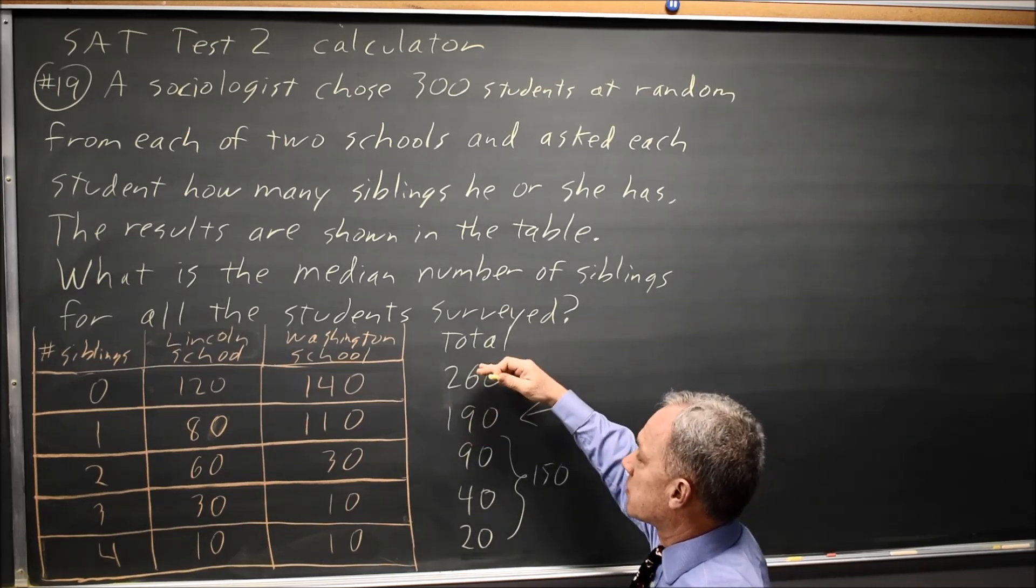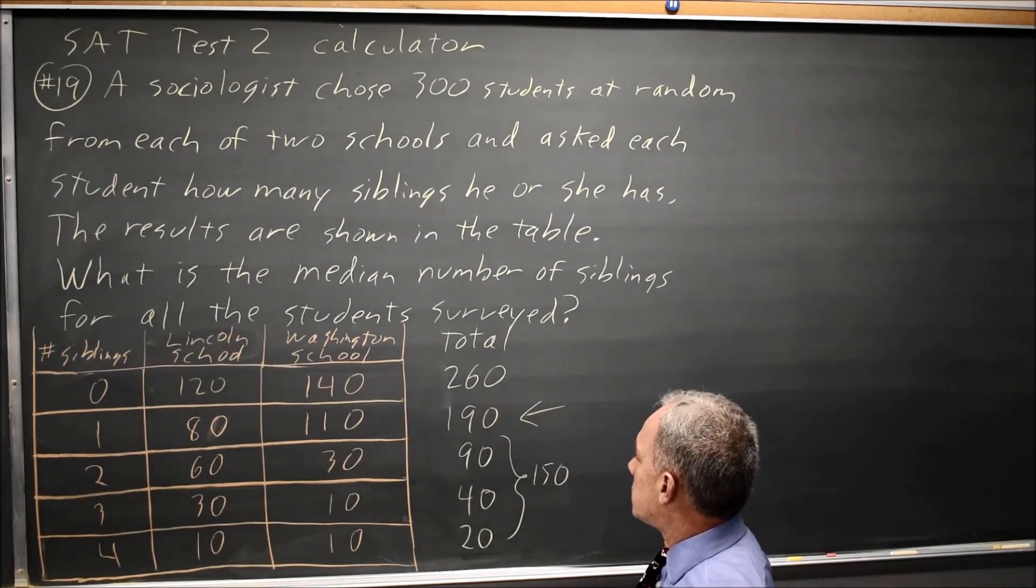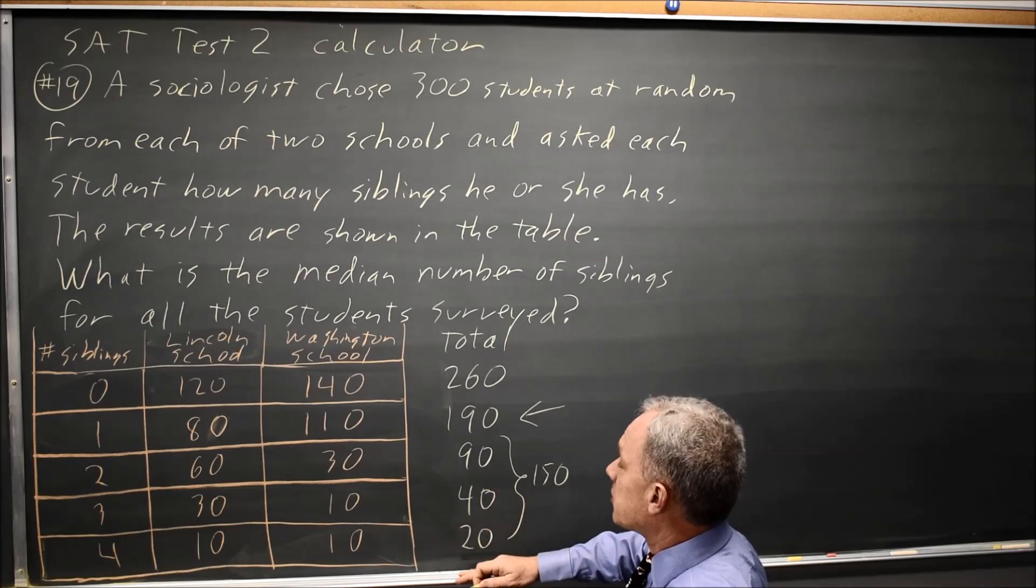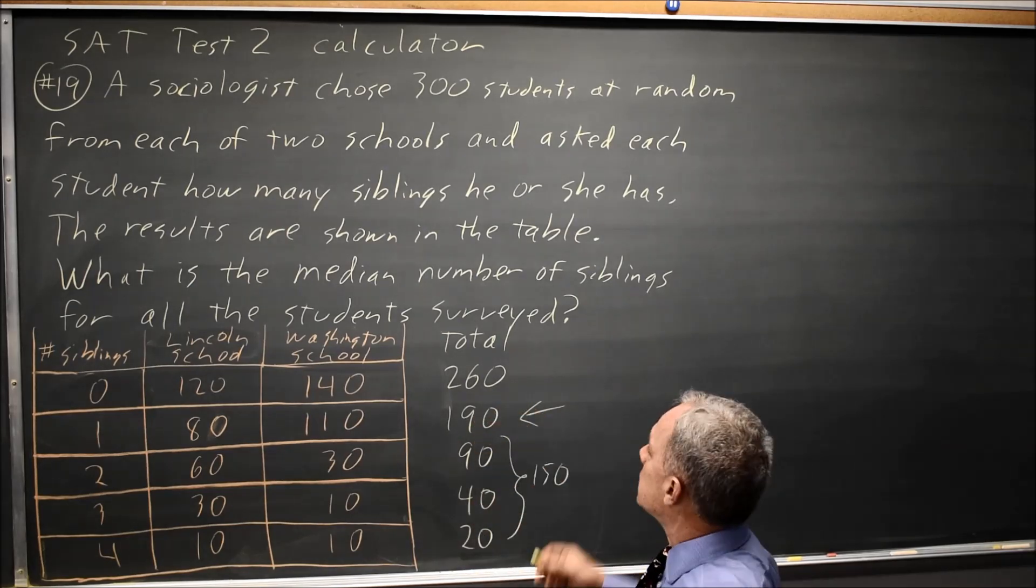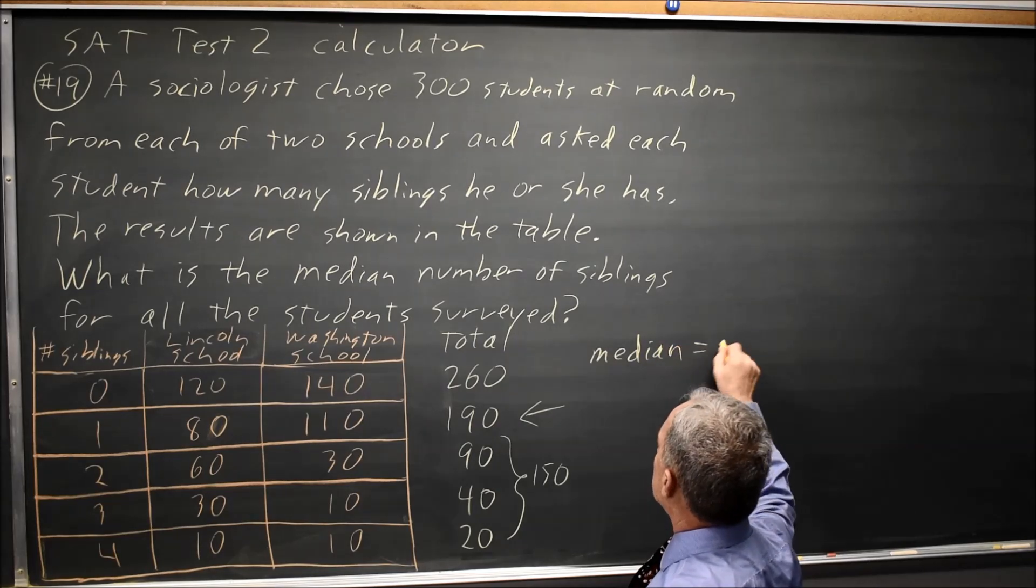So the 300th value is 1. And 150 plus 190 is 340. So the 300th value from the largest is also 1. So median equals 1.